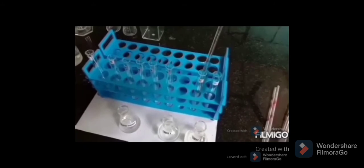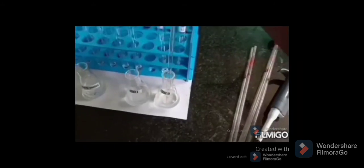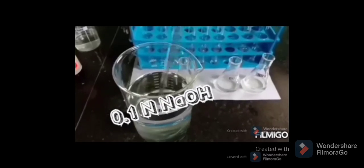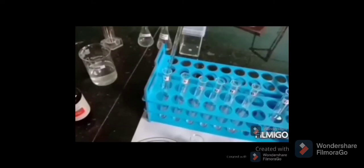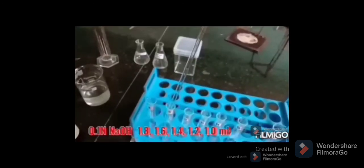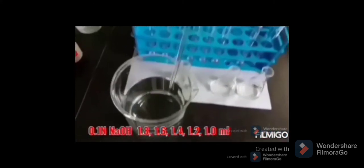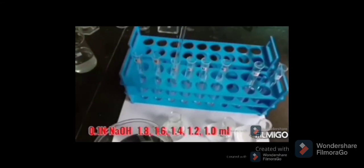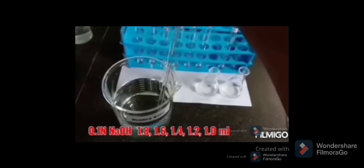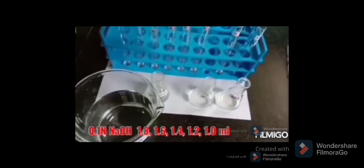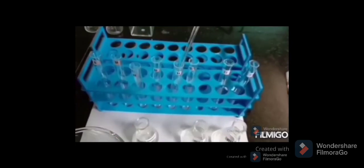One ml each of unknown test 1 and test 2 are added to tubes marked T1 and T2. This is followed by addition of 0.1 normal NaOH: to the blank, 2 ml; from S1 to S5, add 0.1 normal NaOH exactly 1.8, 1.6, 1.4, 1.2, 1.0 ml. Further, 1 ml is added to T1 and T2. So all the tubes are now made up to 2 ml.